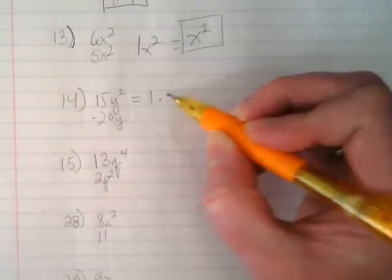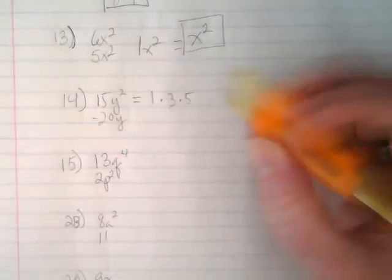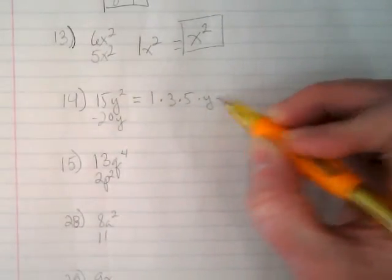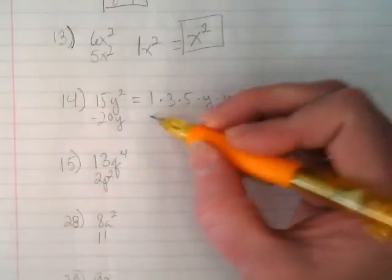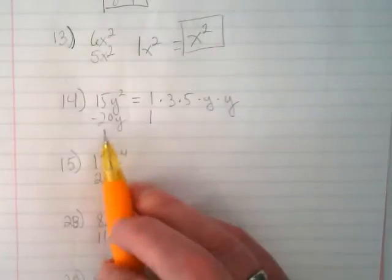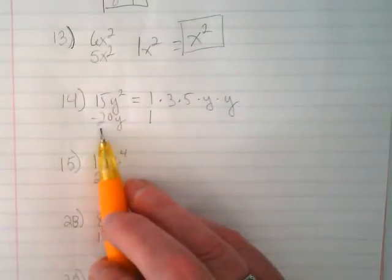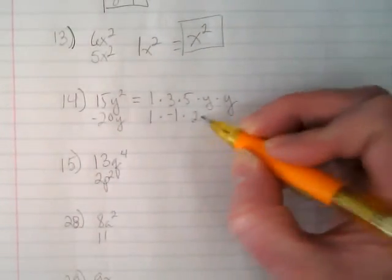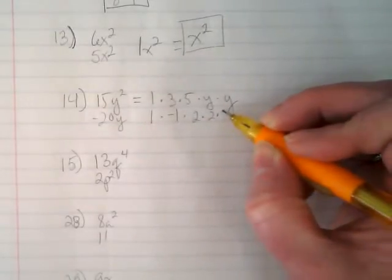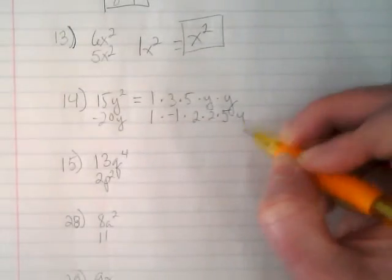15y squared would be 1 times 3 times 5 times y times y. Then we have a negative 20. All numbers have a positive 1 as a factor. But this also has what kind of 1? It also has a negative 1, and then it has two 2s and a 5 and a single y.